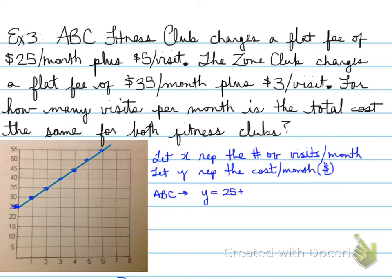Moving forward, we also know that we could represent ABC in an equation. Why? Well, we know that the monthly charge is y, and that equals $25 plus 5x. 5 being the $5 charge per time that you use it per month, and that's what the x is. All right. And we have the Zone club, which is the equation y equals $35 plus 3x.